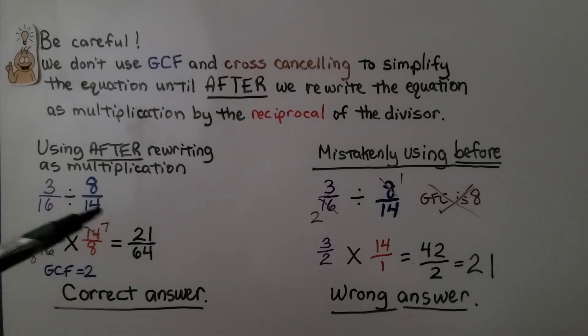So be very careful that you turn it into a multiplication problem with the divisor flipped around to its reciprocal before you use the GCF in cross canceling.